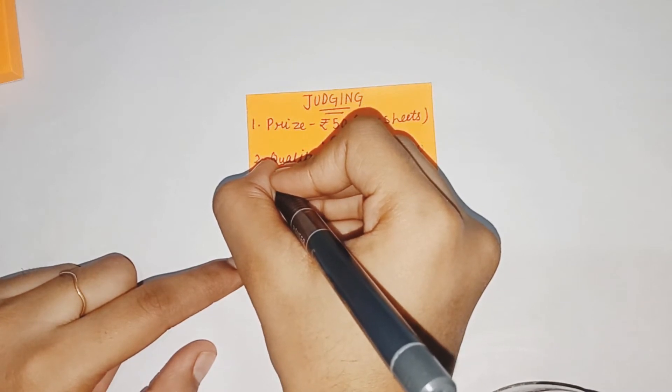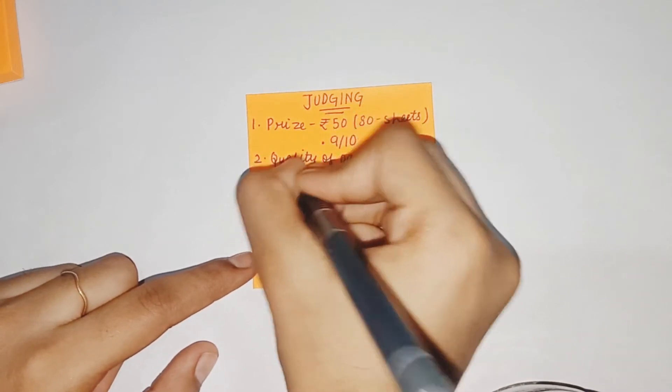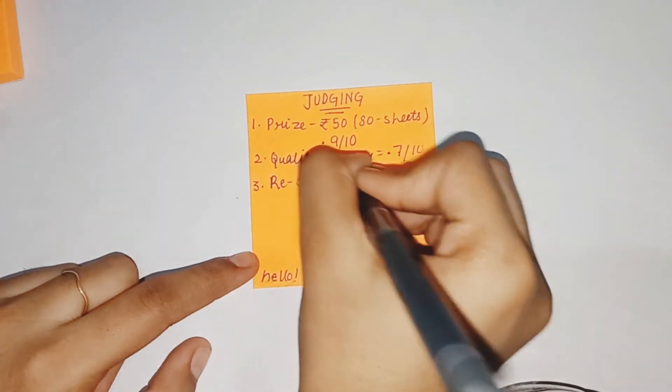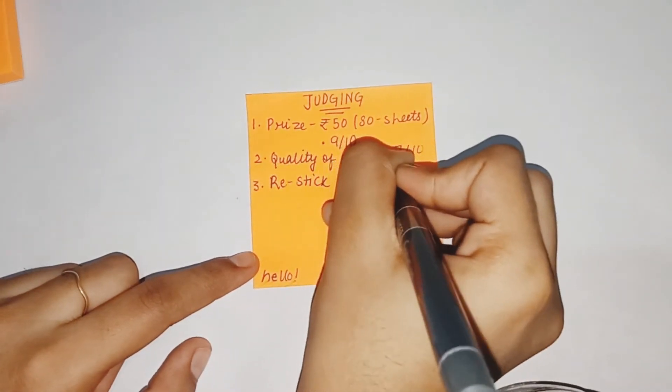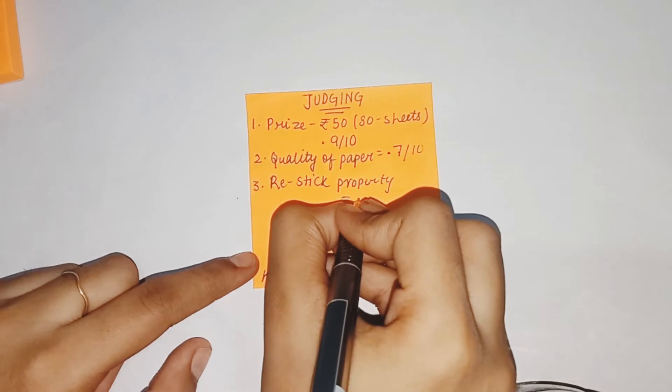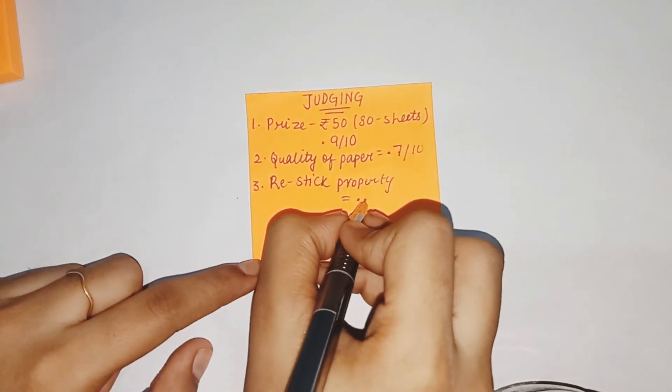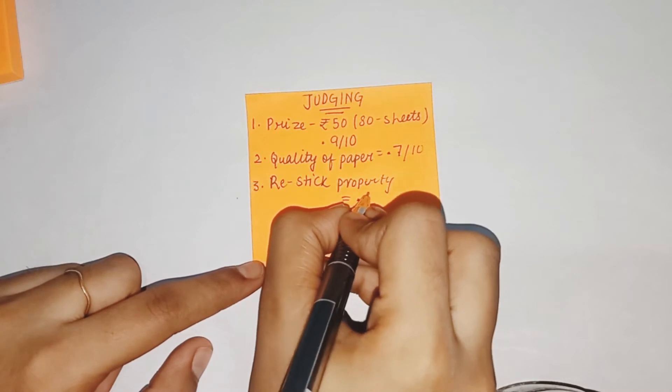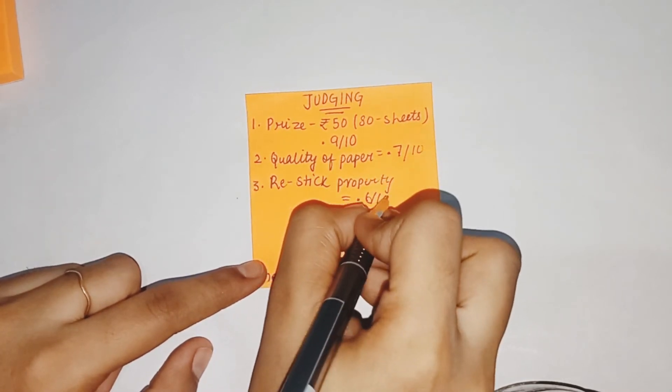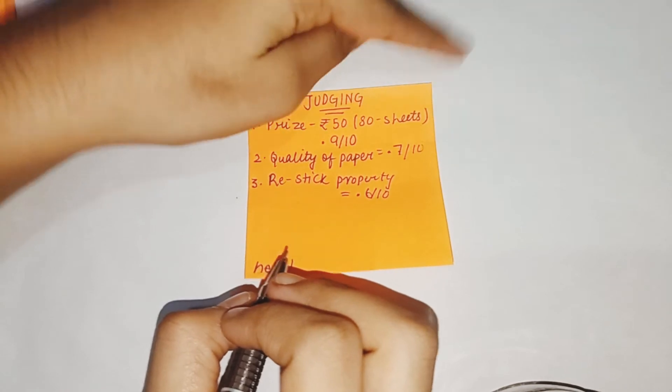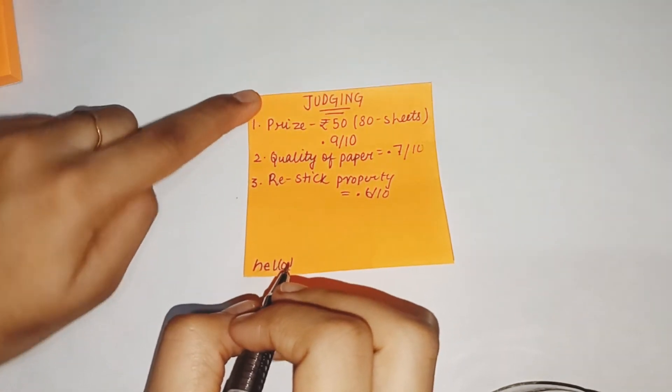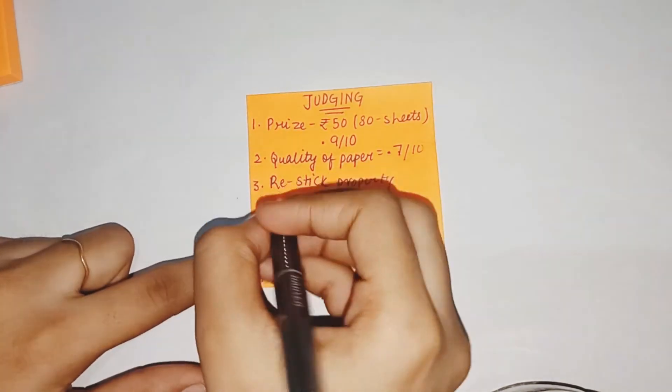My third criteria is re-sticking property and I would give it 6 out of 10 because it has come out of the table. The re-stickable property is not that good.